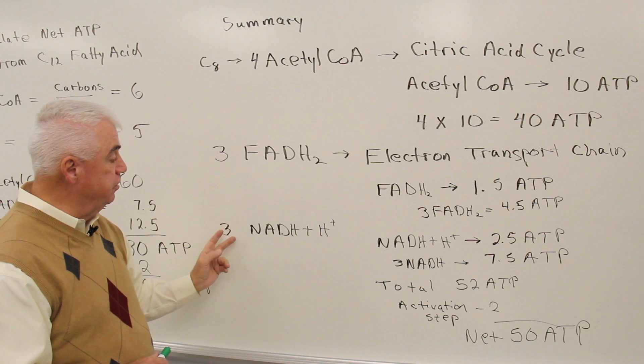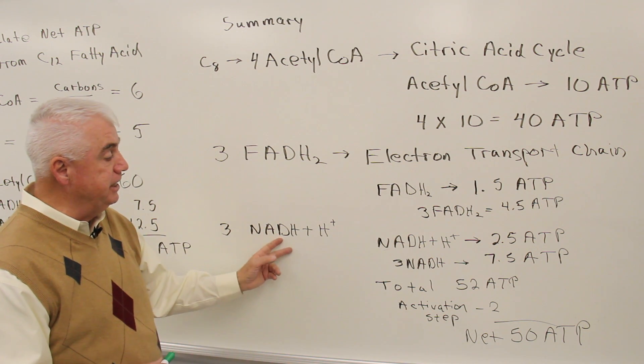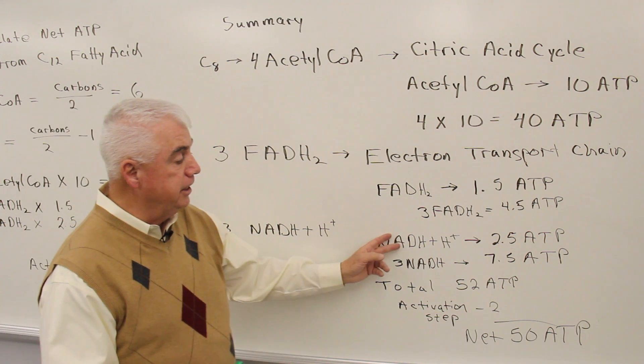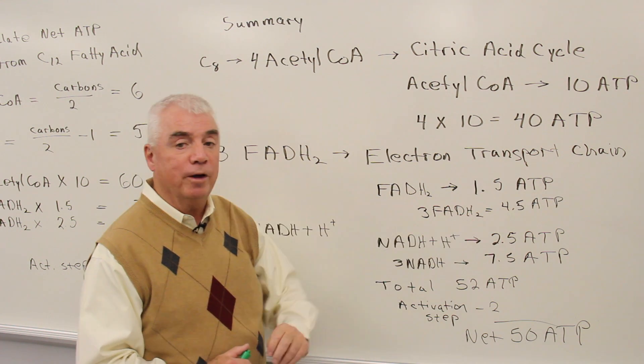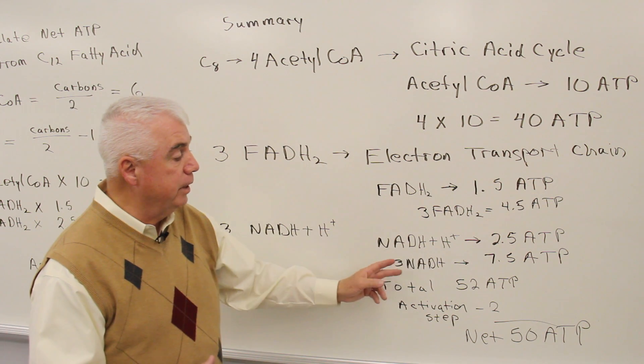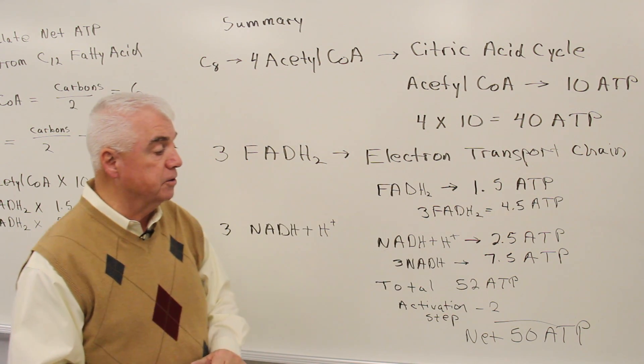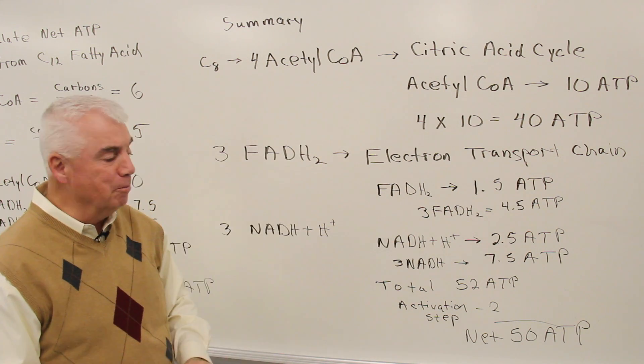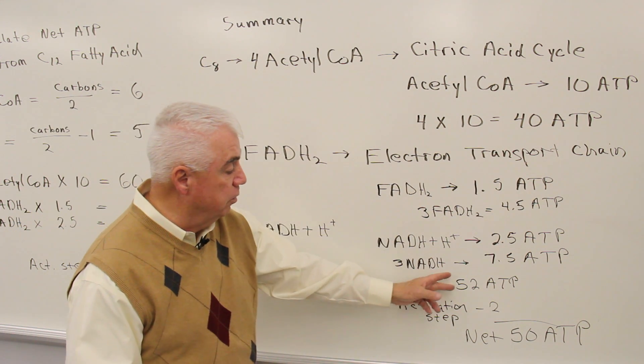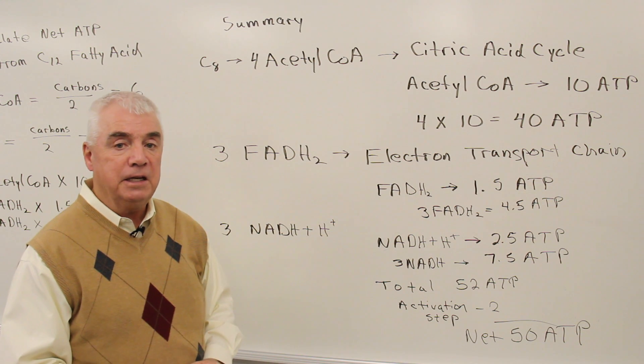And in that series of reactions, we'd get three NADHs. NADH, when it goes to the electron transport chain, gives us 2.5 ATPs. Three times 2.5 would give us 7.5 total. If we add all of those numbers up now, the three numbers, we'd get 52 ATPs.